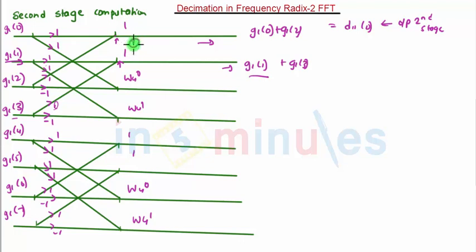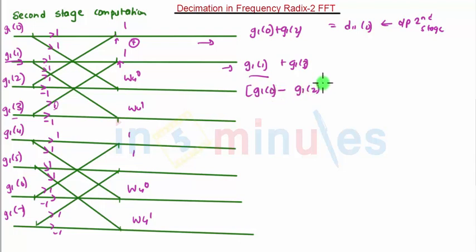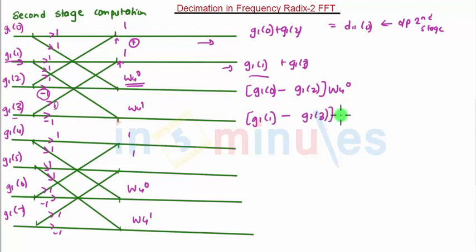These endpoints are summation points, so the values get converted to their sum. The output of the second stage is: d11 of 0 equals g1 of 0 plus g1 of 2, and d11 of 1 equals g1 of 1 plus g1 of 3. For d12 of 0, we get g1 of 0 minus g1 of 2 multiplied by W4 raised to 0. For d12 of 1, we get g1 of 1 minus g1 of 3 multiplied by W4 raised to 1.